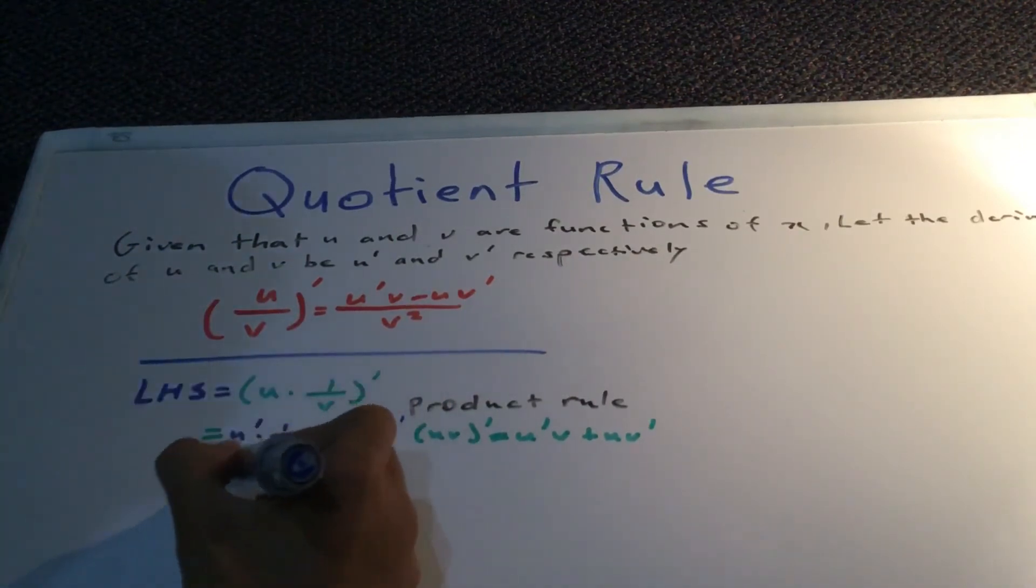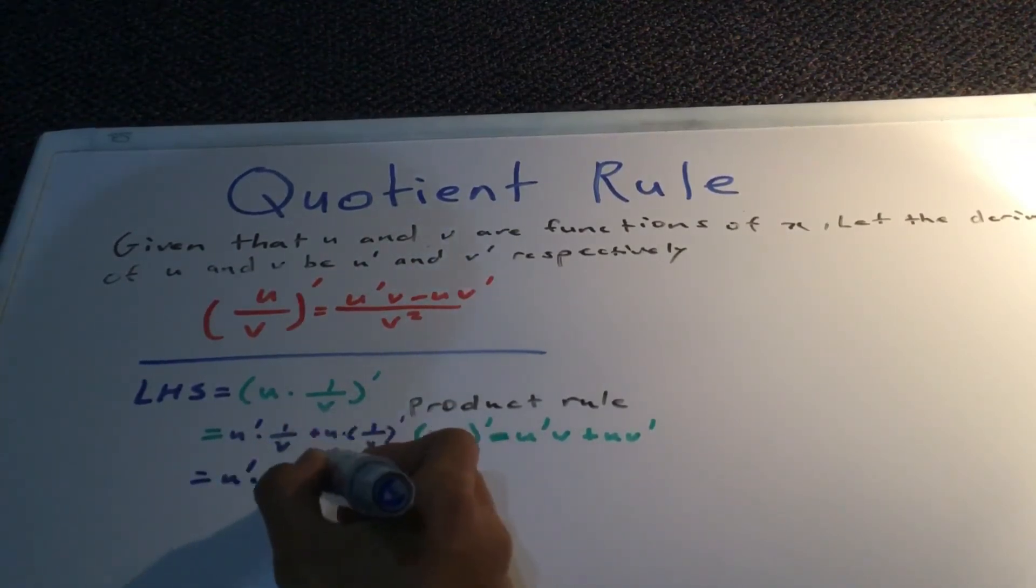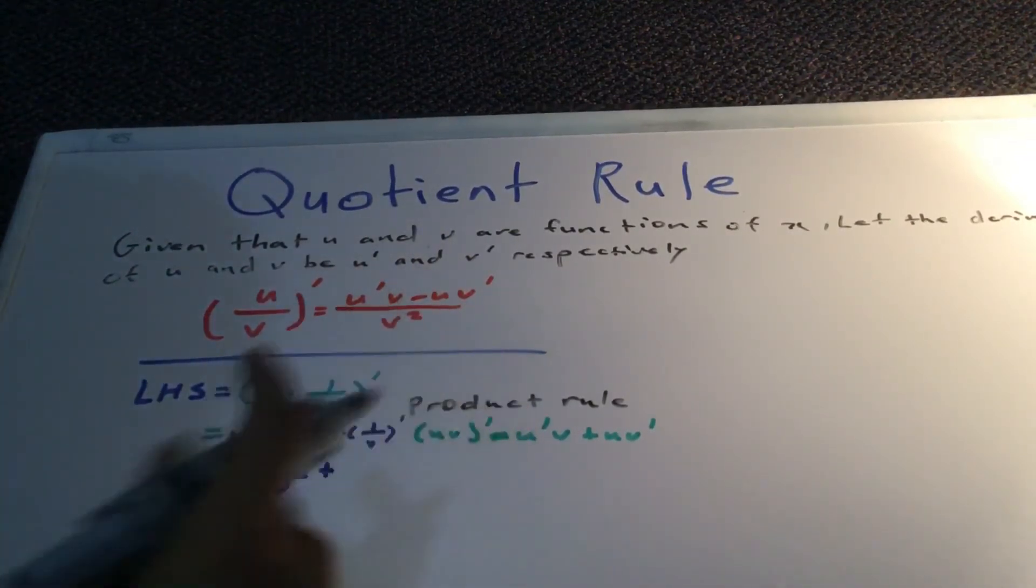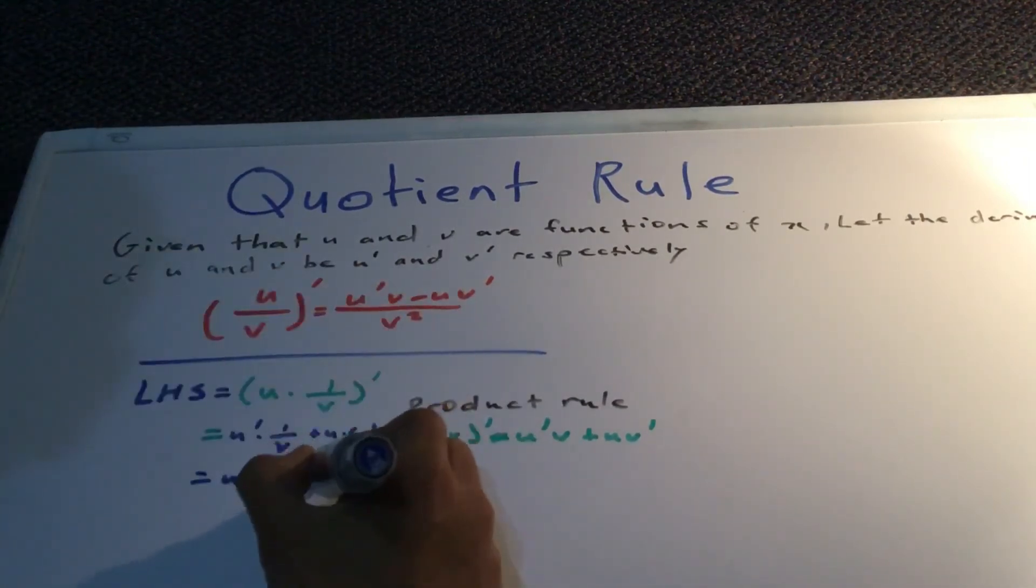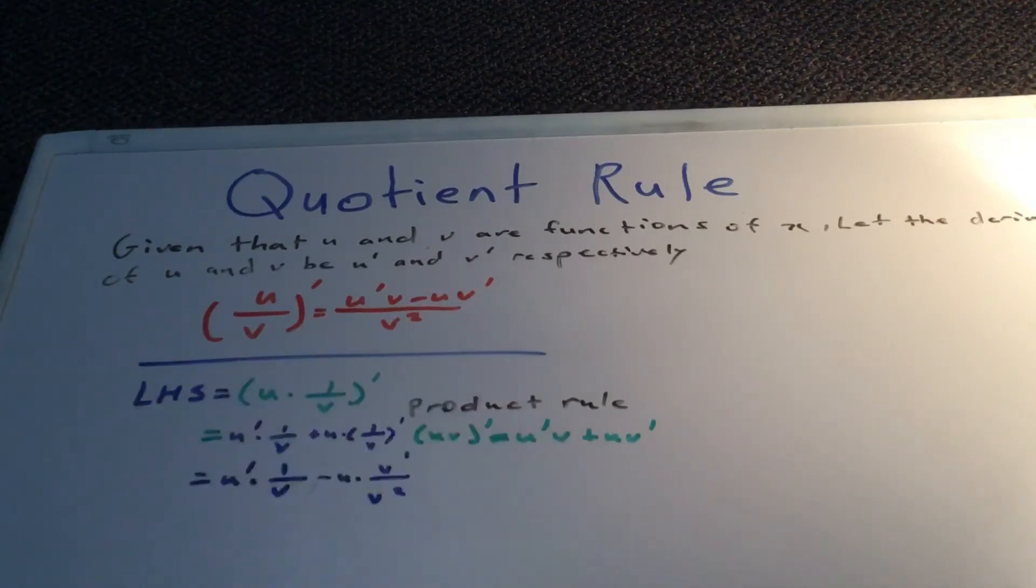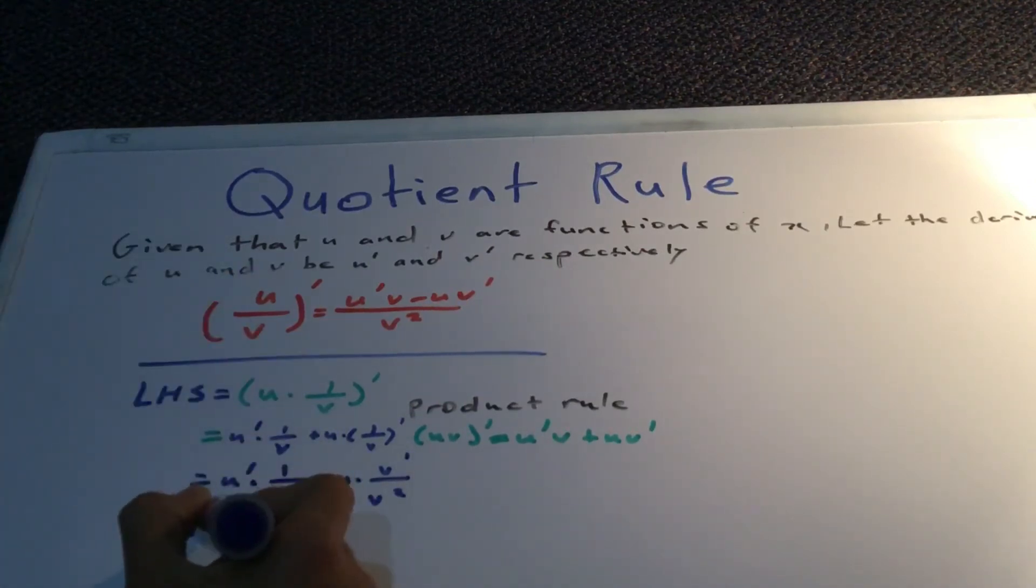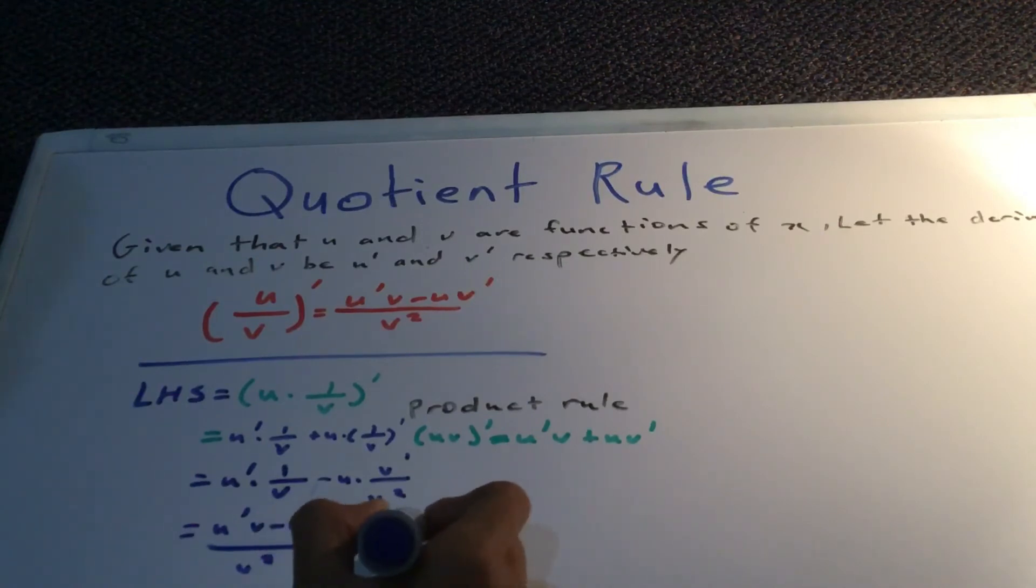So now we're going to take the terms together. Oh sorry, this should be minus. So minus u times v prime over v squared. And then it's equal to u prime v minus u v prime over v squared, which is equal to the right-hand side.